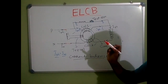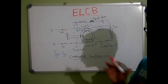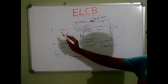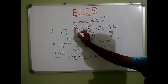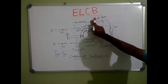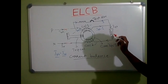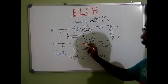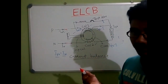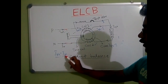Now we are going to look at how this ELCB works. The first condition we consider is the normal condition — that is, there is no leakage current. When there is no leakage current, this phase current flows through Coil 1, then through the load, then through Coil 2, and reaches the neutral. Since Coil 1, load, and Coil 2 are in series, I-phase and I-N are equal — that is, phase current and neutral current are equal.